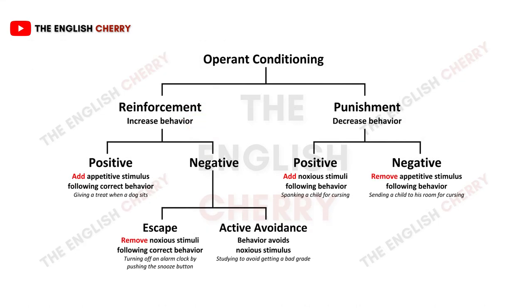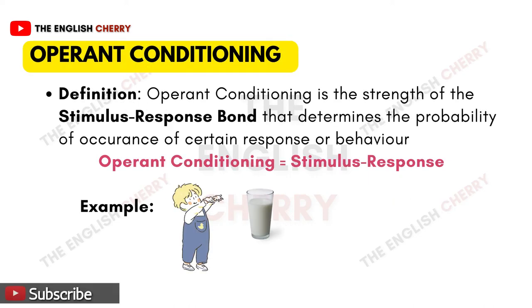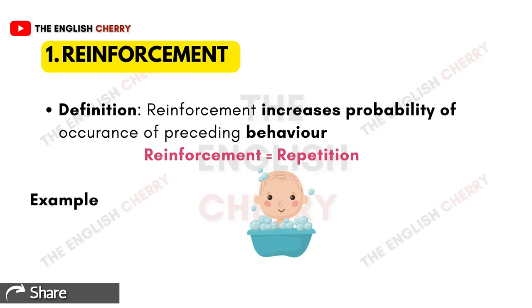Operant conditioning is the strength of the stimulus-response bond that determines the probability of occurrence of a certain response or behavior. For example, if a child is given a glass of hot milk, the parents will warn him not to touch the glass. If he accidentally touches it, he will remember the stimulus — because it was hot — and will not touch it again. In this way, a response is developed through conditioning. The chart shows how operant conditioning is divided into reinforcement and punishment.